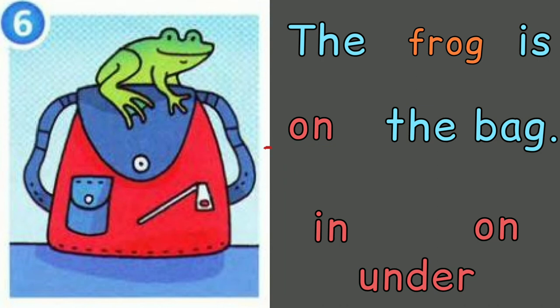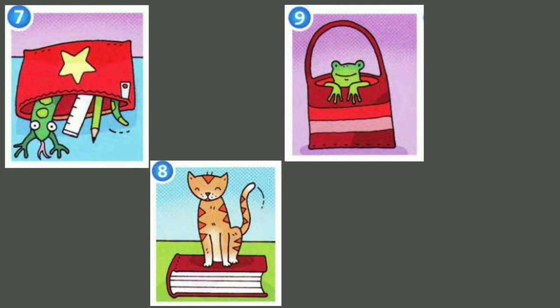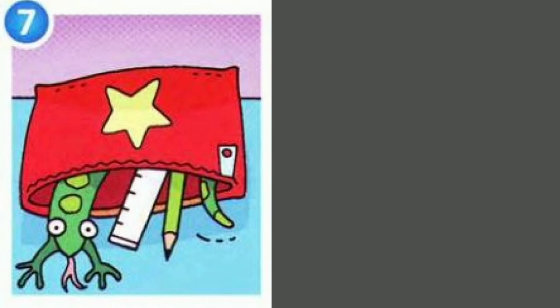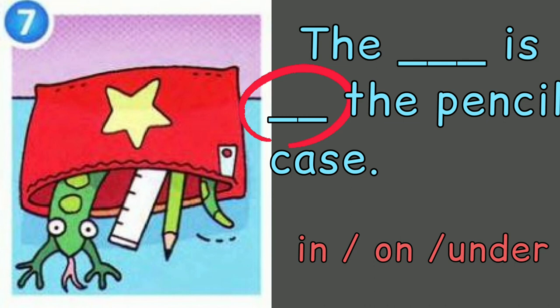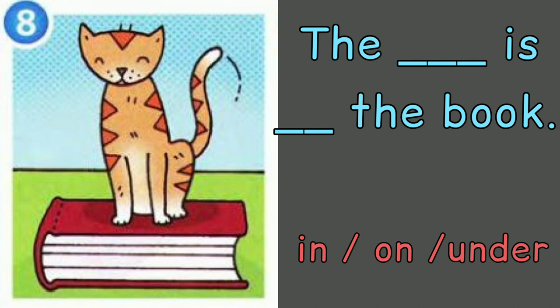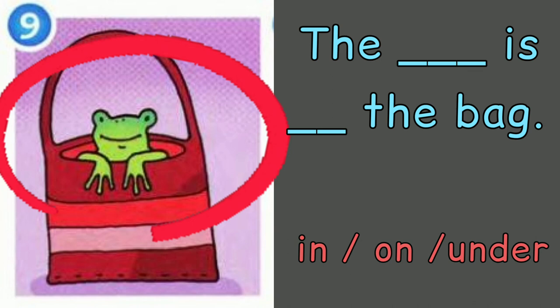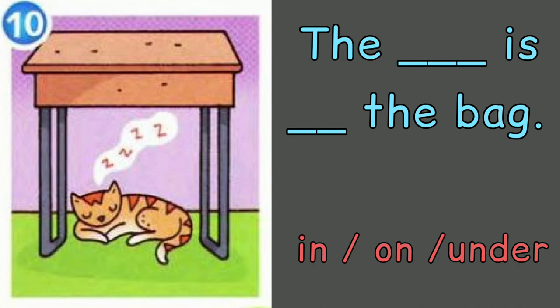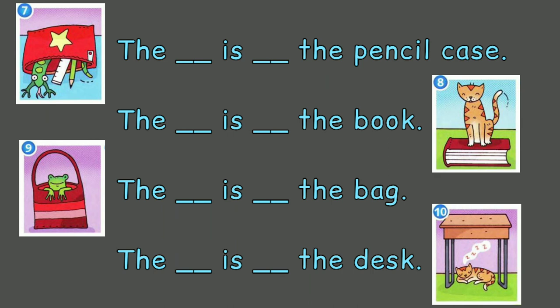For numbers seven, eight, nine, and ten, I want you to do it yourself. Look at what animal is in the picture and where is the animal. Picture seven: What is the animal? Where is it? Picture eight: What animal is in this picture? Where is it? Picture nine: What is this animal? Where is it? And picture ten: What is the animal? Where is it? Write down your answers in your exercise book. Look at the pictures in your textbook for reference.